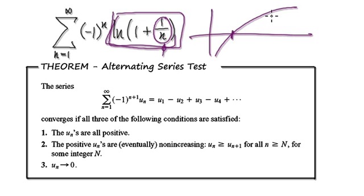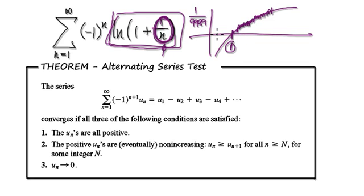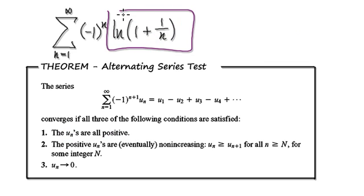One way of visualizing this is that it's heading towards one, towards the number one here. But it will never reach one because one over n will never reach zero. This thing will never reach zero, so you're always approaching this number one here. But you will never get there because one over n will never reach zero. So you can see that all the u_n's will be positive, meaning condition one has been met.